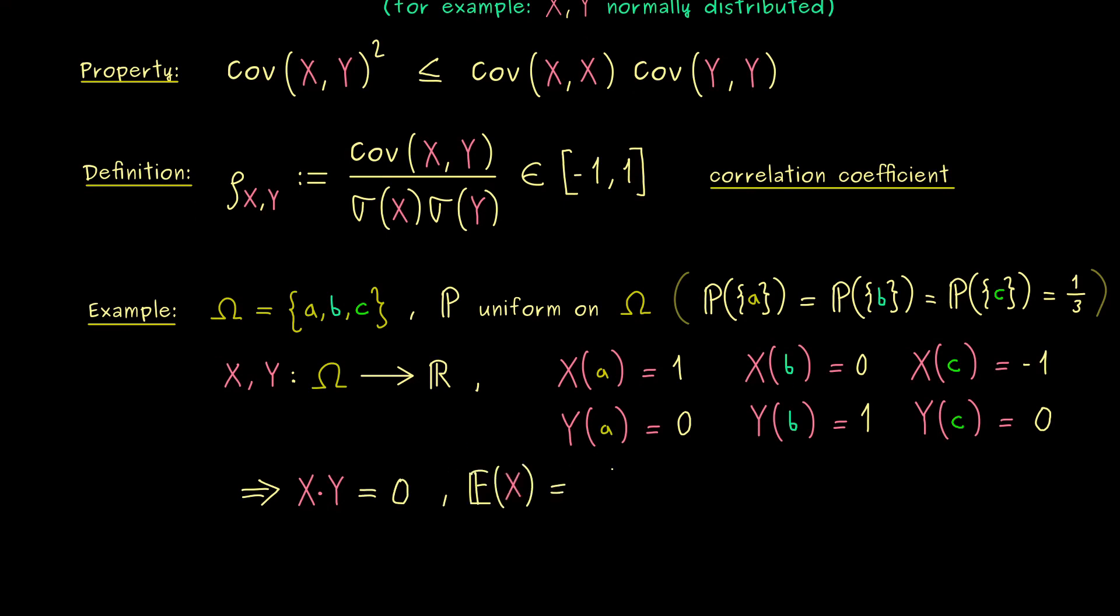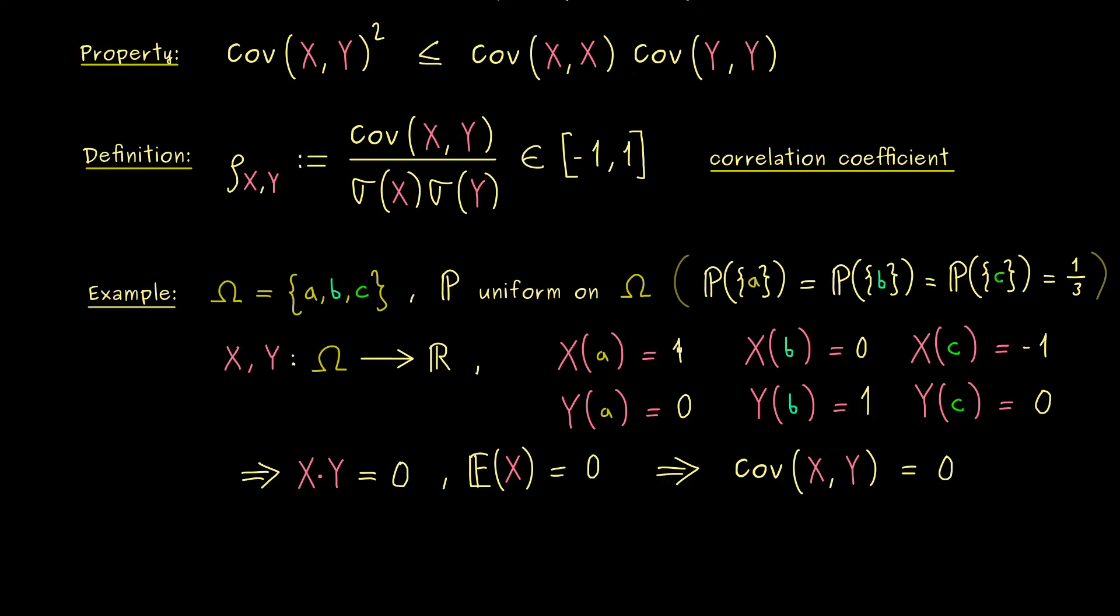However, also by construction the expectation of X is equal to 0. So by using the formula above, we conclude that the covariance between X and Y is equal to 0. So indeed, they are uncorrelated simply because how they act on each element.